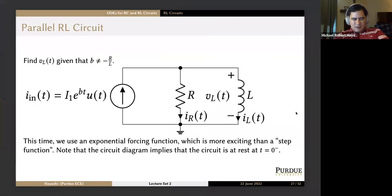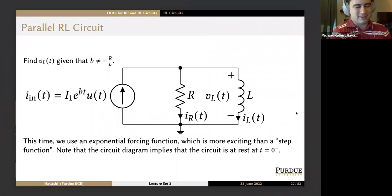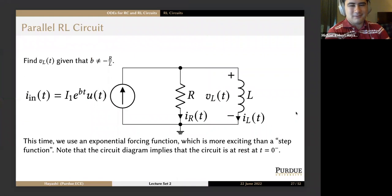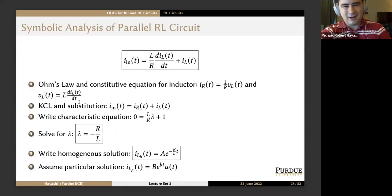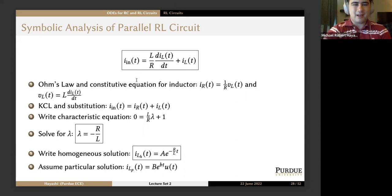Last time we covered the basic first-order circuits — series and parallel RC, series and parallel RL. As a refresher, let's go over the parallel RL circuit. We used a step exponential decay as the forcing function. Using Ohm's law — i_R equals one over R times v_L — and v_L(t) equals L times di_L/dt, we got the ODE: i_n(t) equals L/R times di_L/dt plus i_L(t).